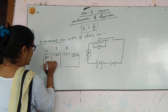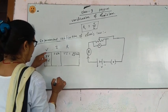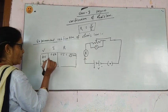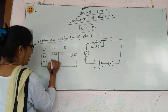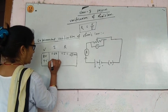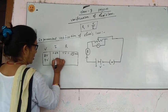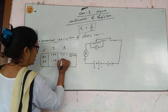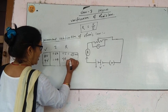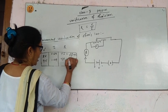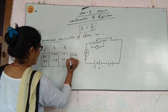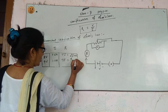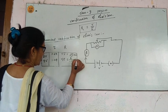Now you change the value of V. Suppose you take 4 volts, and the current is 1.0 ampere. Then again, V divided by I is 4 divided by 1.0, which is 4 ohm.